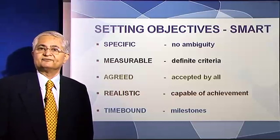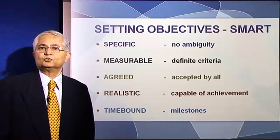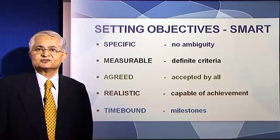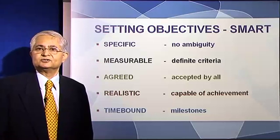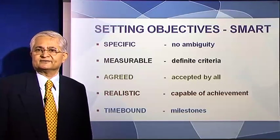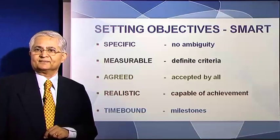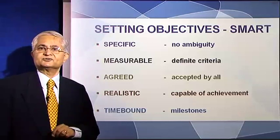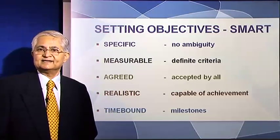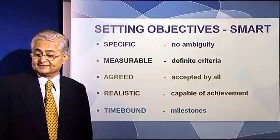For instance, if a company says let us achieve greater market penetration into the market for radial tires, that is an objective — but that is not a measurable objective. A measurable objective is when you say: let us increase our market share in radial tires from 20% to 30%. That is a measurable objective. So the second criteria in setting SMART objectives is measurability.